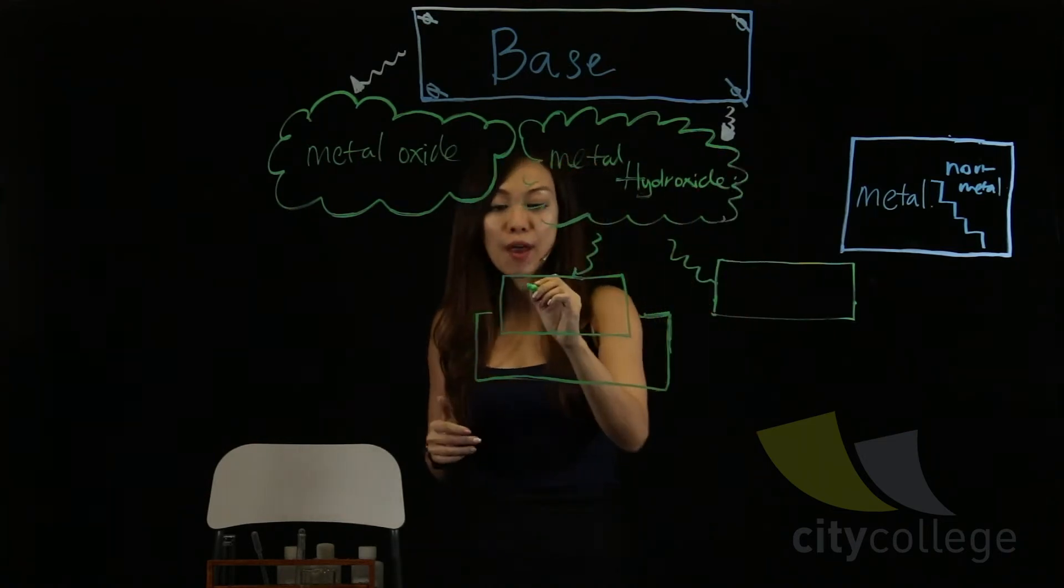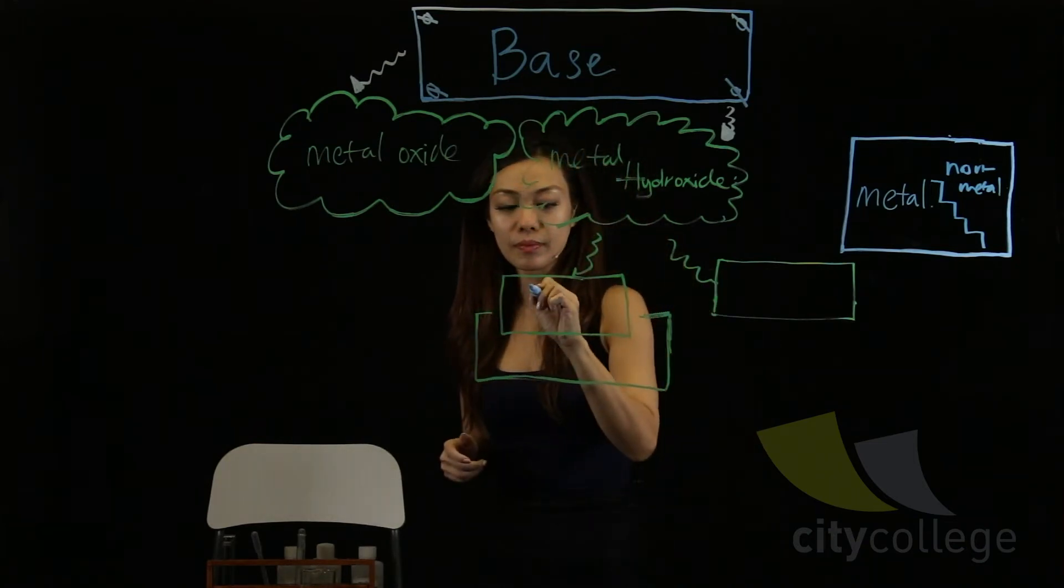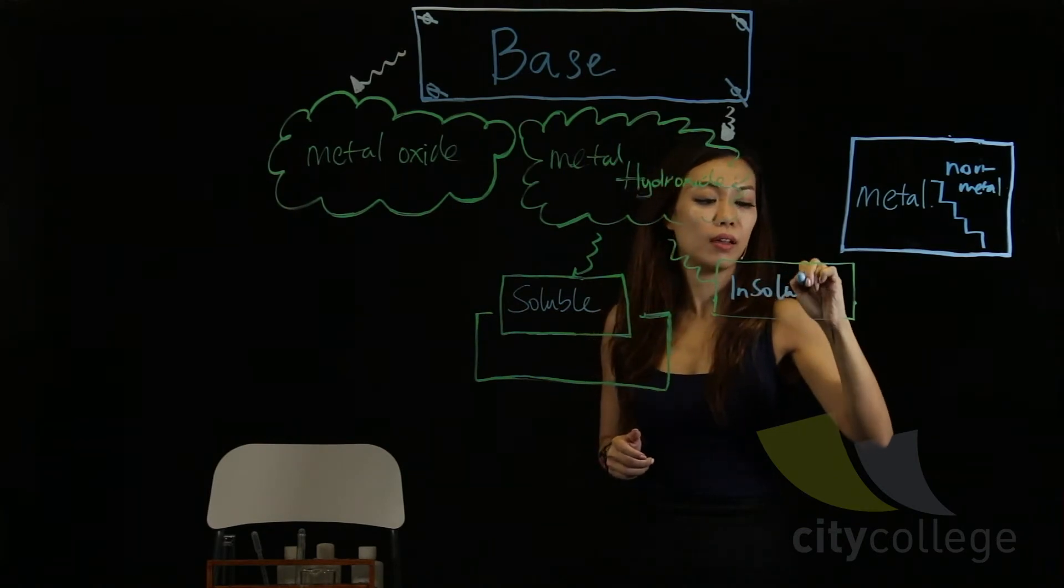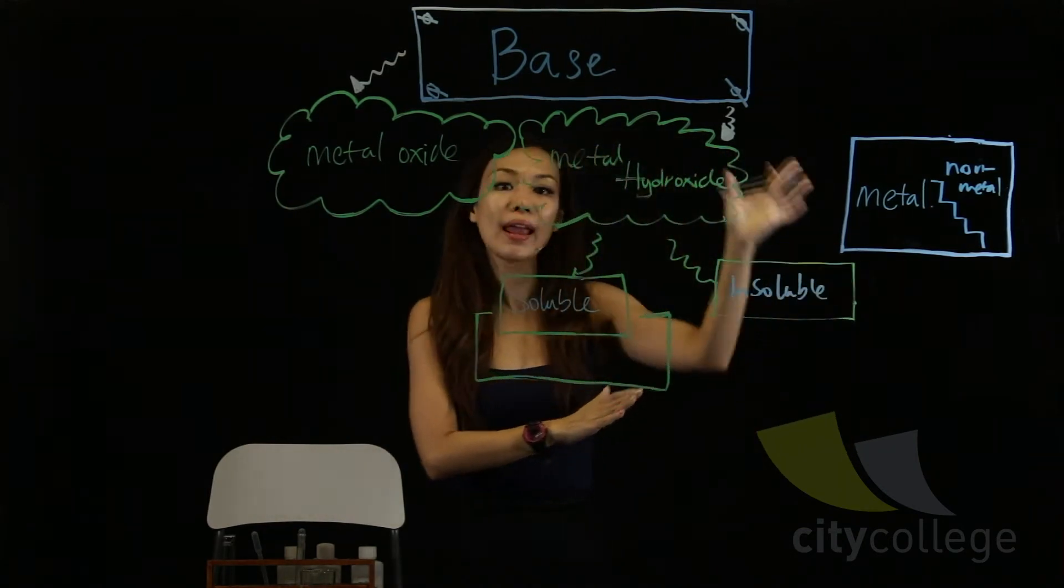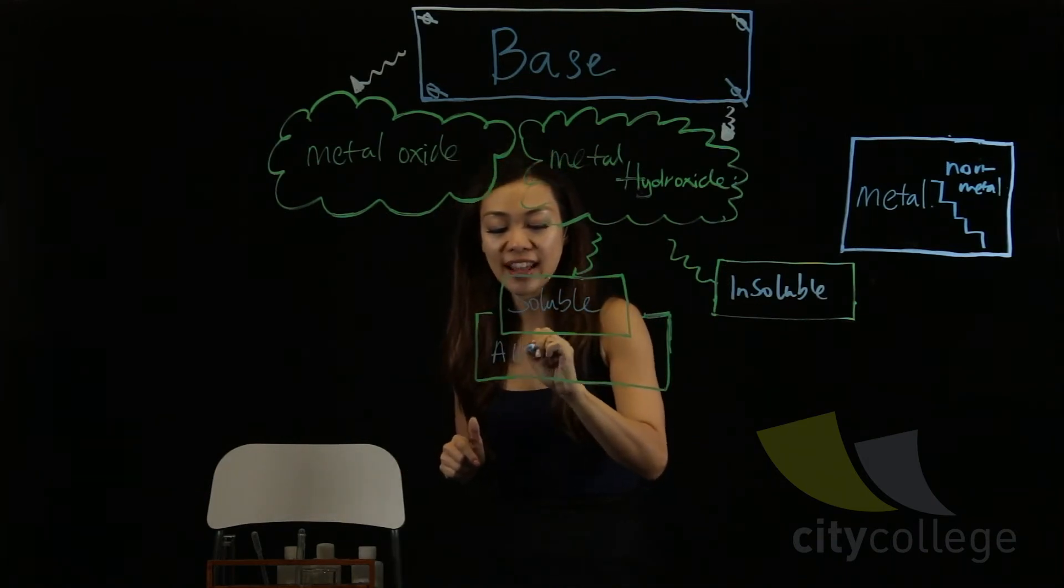And under metal hydroxide, we have two parts. We have the soluble one, and we also have the insoluble one. The insoluble remain as a metal hydroxide. However, the soluble will form alkaline.